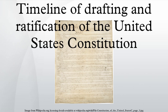May 29: The Virginia Plan for structuring the federal government is presented by Edmund Randolph. May 29: The Pinckney Plan for structuring the federal government is presented by Charles Pinckney. June 15: The New Jersey Plan for structuring the federal government is presented by William Patterson. June 16: Rhode Island declines to elect delegates to the Constitutional Convention. June 18: The Hamilton Plan for structuring the federal government is presented by Alexander Hamilton.